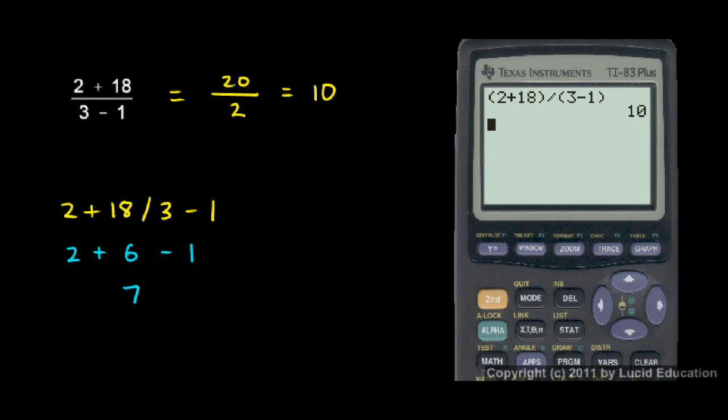And now you see, if I don't put in the parentheses, I'll end up with a 7, like we talked about. So if I just type in 2 plus 18, divided by 3, minus 1, in this case, it will evaluate the 18 divided by 3 first, since it knows to do division before addition and subtraction. And you see, I get 7. Two very different answers.